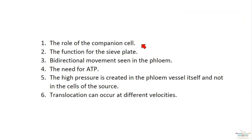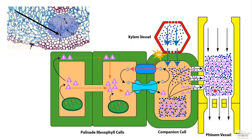On the next slide, we're going to look at evidence for the role of the companion cell, the need for ATP, and that hydrostatic pressure is created in the phloem itself — evidence for points one, four, and five. This diagram is showing something called sucrose loading, and it is this sucrose loading that requires ATP, needs the companion cell, and will ultimately lead to high pressure within the phloem vessel.